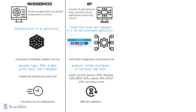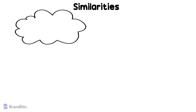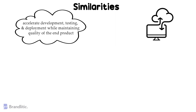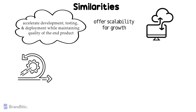Number one: both microservices and APIs are used in software development with the aim to accelerate development, testing, and deployment while maintaining quality of the end product. Number two: both support cloud-based applications. Number three: both technologies offer scalability to support your applications as they grow more extensive and more functionality is added. Number four: microservices and APIs both offer agility for developing application modules and functions.